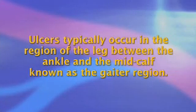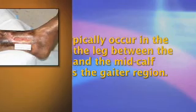Ulcers typically occur in the region of the leg between the ankle and the mid-calf known as the gaiter region. The ulcer usually extends through the entire thickness of the skin into the subcutaneous tissue, but does not involve deeper structures such as muscle, tendon, or bone.